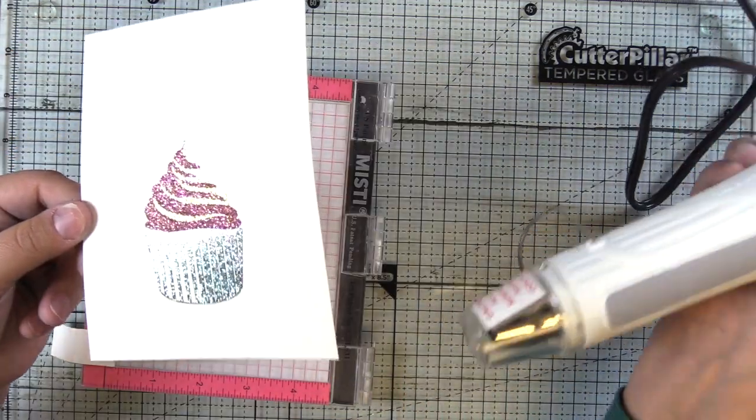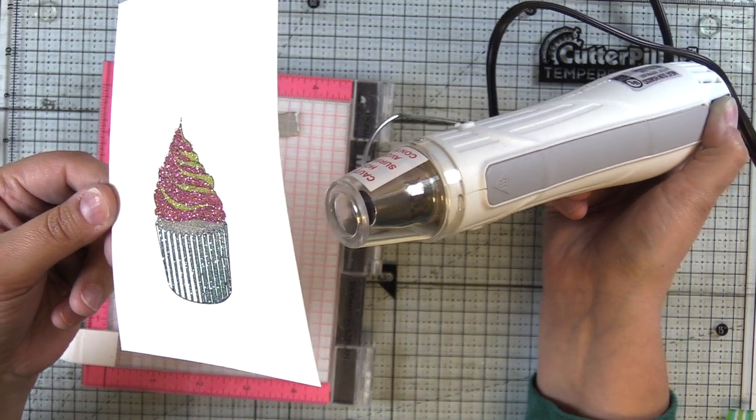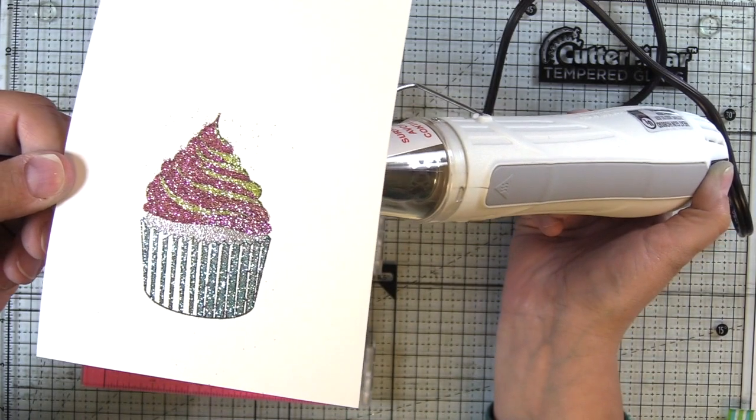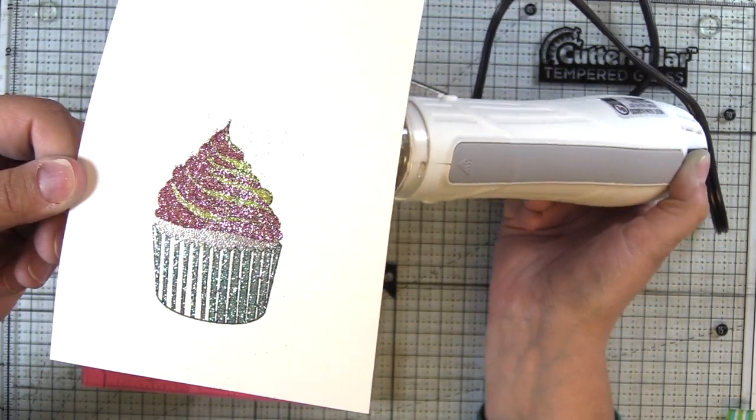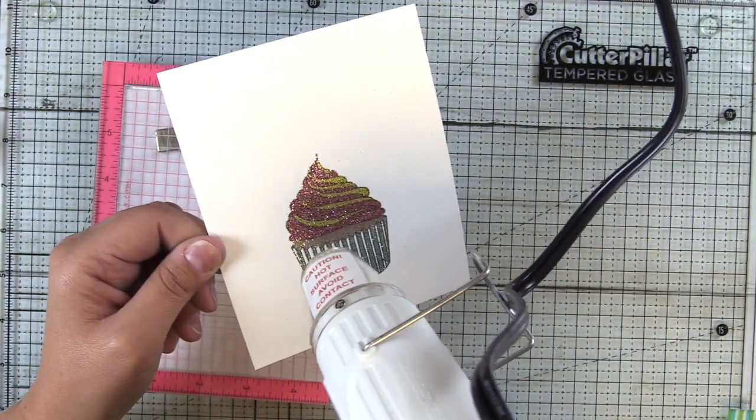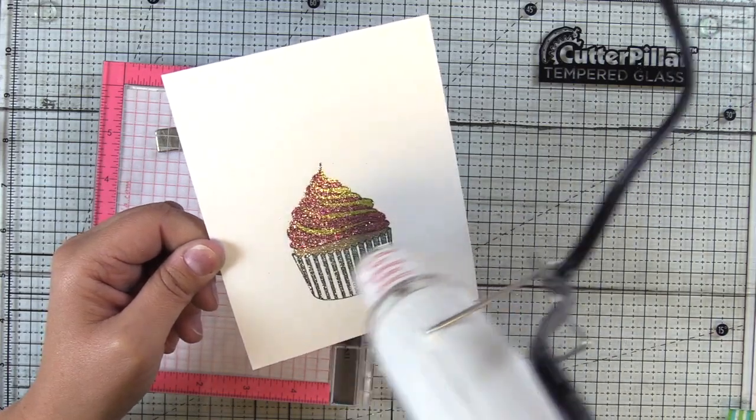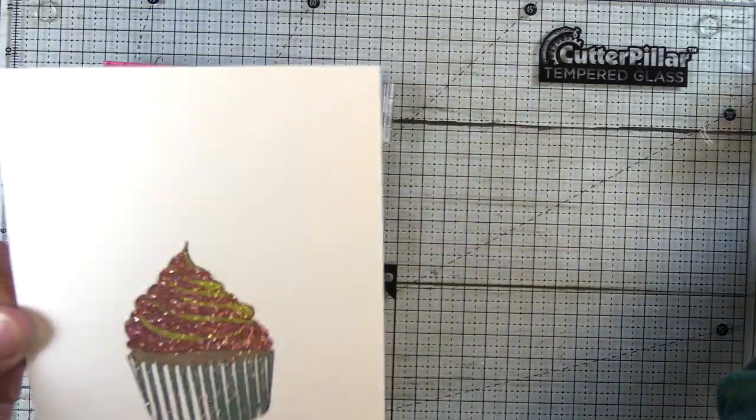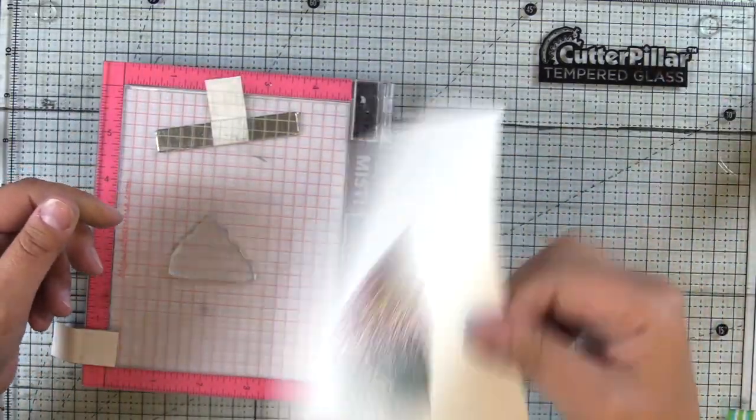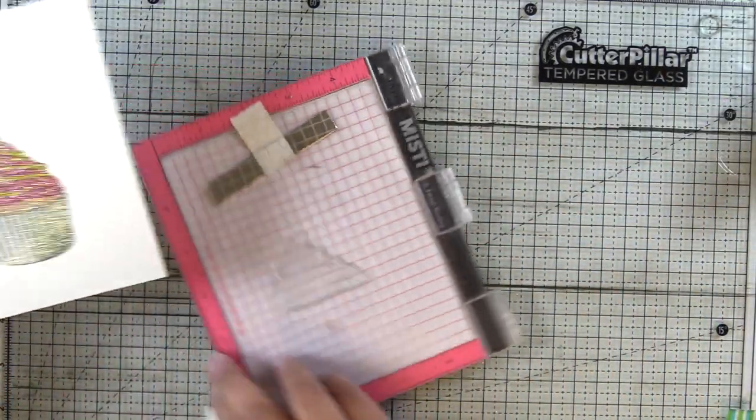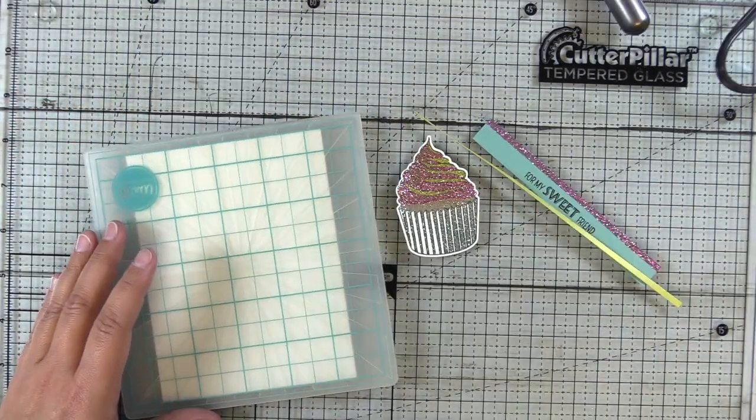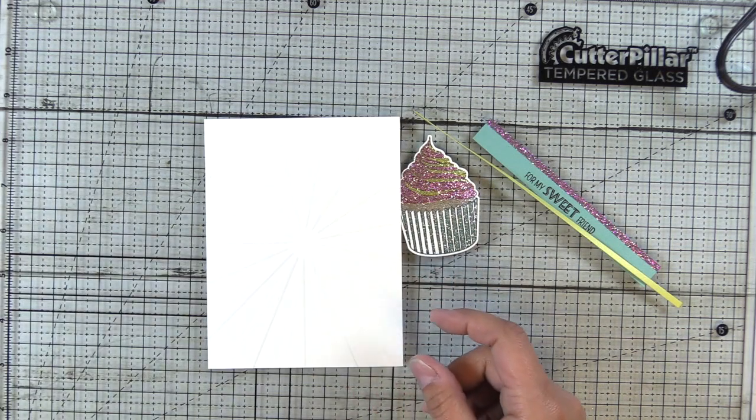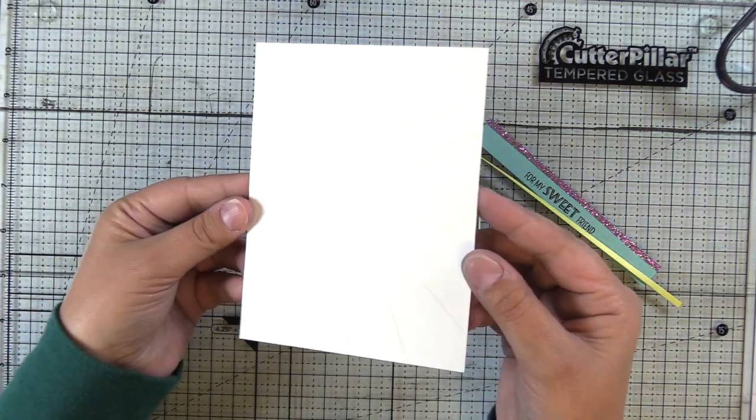So again, I'm going to heat it from behind so that we don't blow any of that off, especially because it wasn't adhered to an even surface, it's adhered just to that glitter that's down below it. And we'll get that all adhered and then after we're done embossing I'll go ahead and die cut this. So I'm just letting it cool off. And I went ahead and die cut it with the coordinating die.